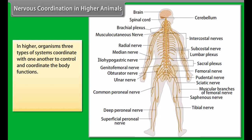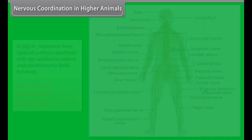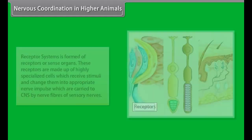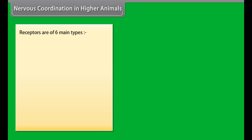In higher organisms, three types of systems coordinate with one another to control and coordinate body functions: the receptor system, the nervous system, and the effector system. The receptor system is formed of receptors or sense organs. These receptors are made up of highly specialized cells which receive stimuli and change them into appropriate nerve impulses, which are carried to the CNS by nerve fibers of sensory nerves. Receptors are of six main types.